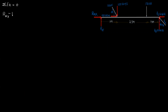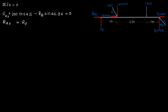For the sum of forces in the x-direction equal to zero: the x-direction terms are minus 100 cos 45 on the right side, and minus RB sin 26.56 on the left side. So RAx equals RB sin 26.56 minus 100 cos 45.